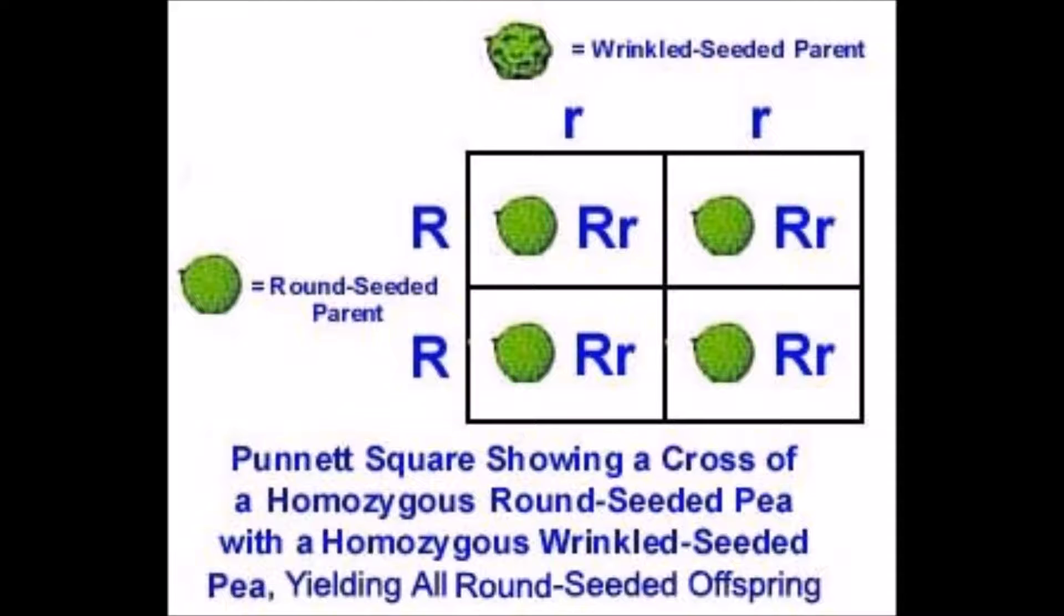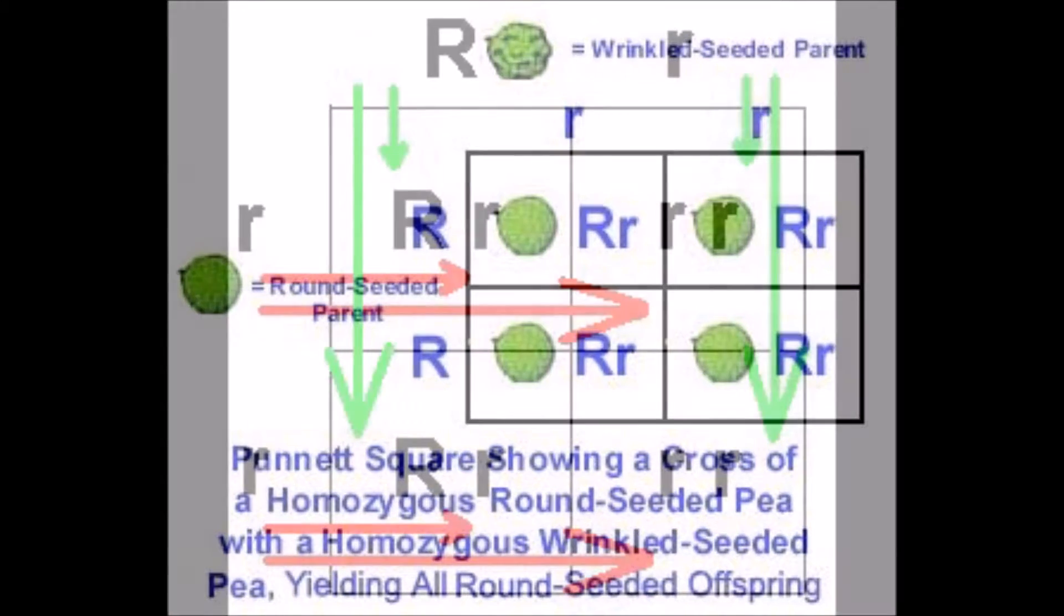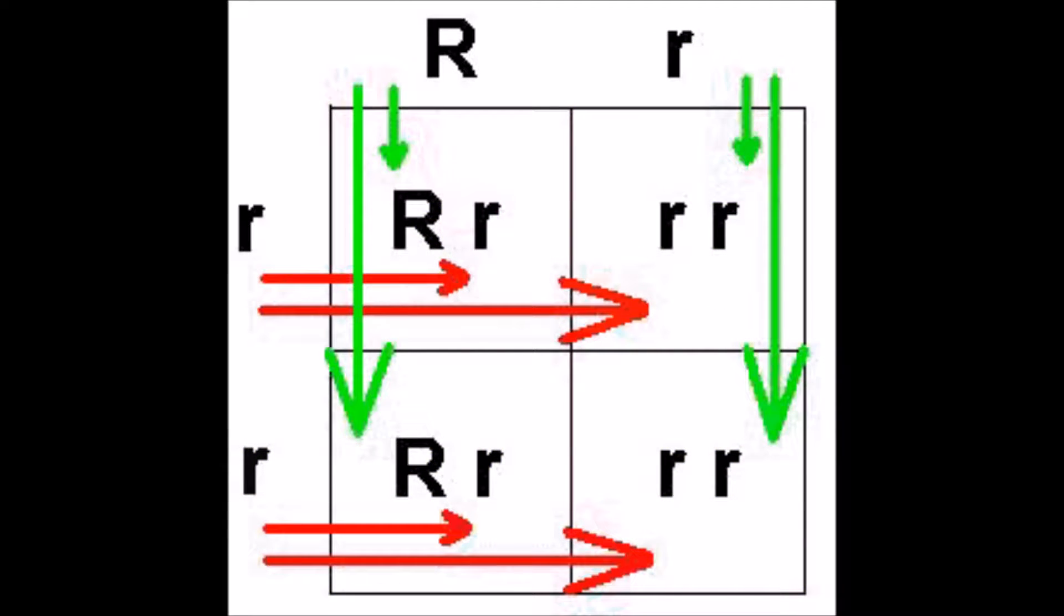Did you guess half were wrinkled and half were round? That's one wrong guess, because here's what he found. Every one of their offspring was round.